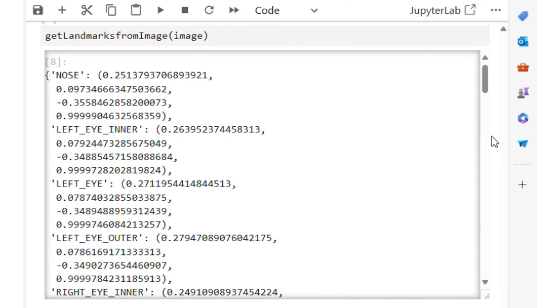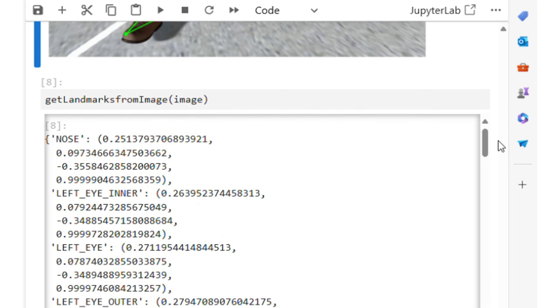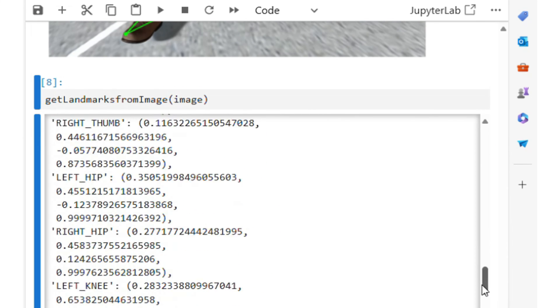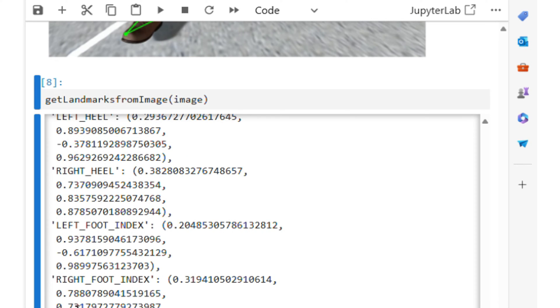Again, the smaller the z value of a landmark point is, the closer it is to the camera. This capability of MediaPipe is amazing. Even without a 3D camera, we can get a computed 3D pose estimation.